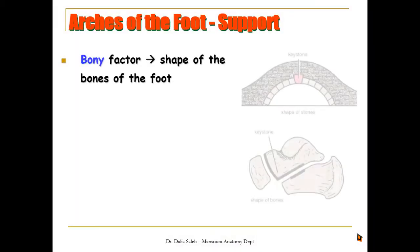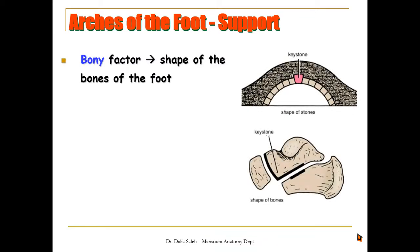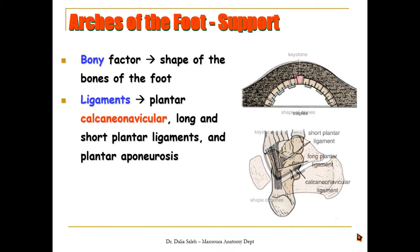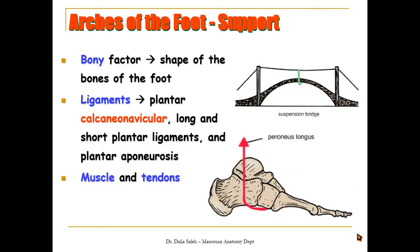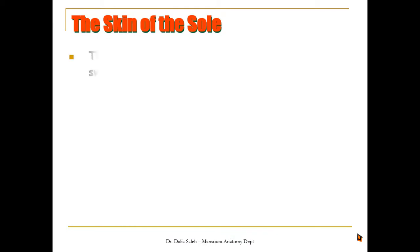There are many factors that support the arches of the foot. One is the bony factor, which represents the shape of the bones themselves. Also the attachment of ligaments, which are strong enough to hold the bones together — the most important being the plantar calcaneonavicular ligament, the long and short plantar ligaments, and the plantar aponeurosis. The third factor is the tonic contraction of the muscles of the foot, especially the short muscles, and the pull of the long tendons which suspend the arches.